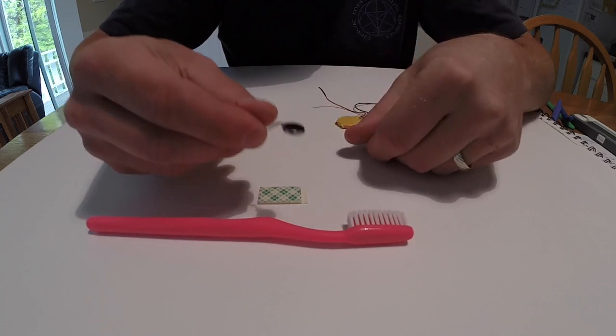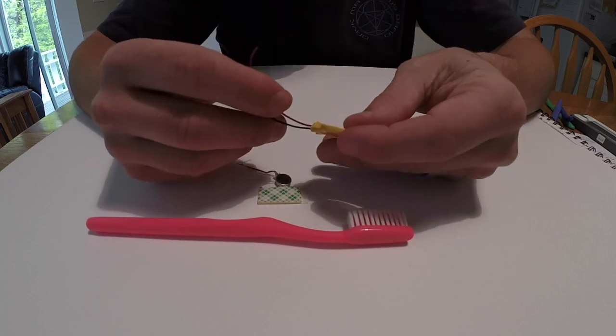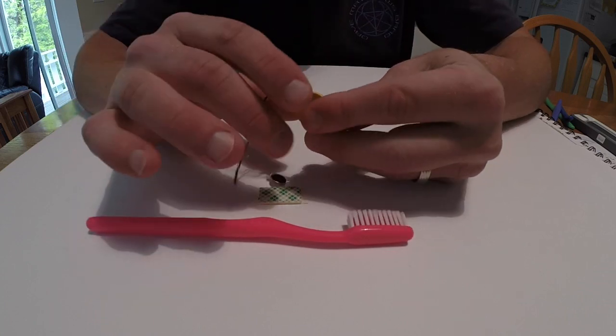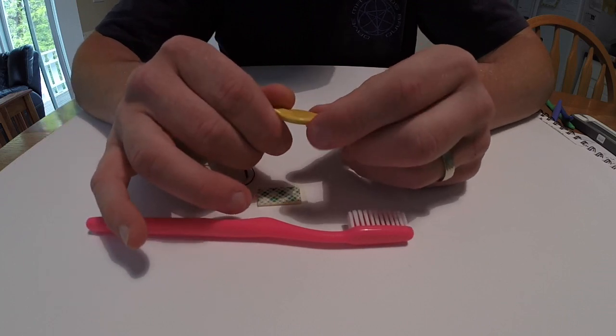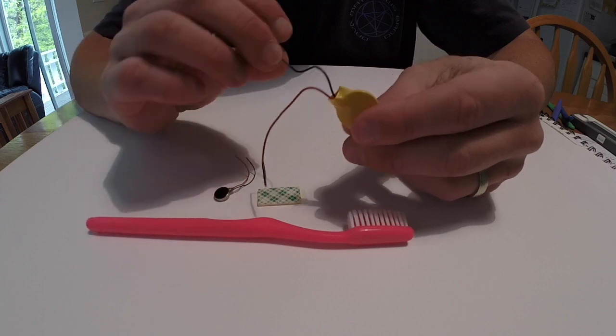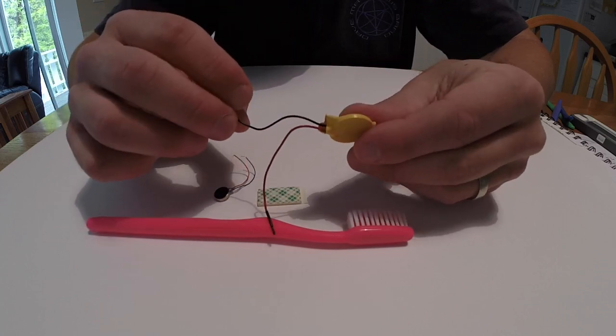And last, we've already got it heat shrinked or shrink wrapped here. We have a three volt coin cell battery with the two leads connected to the coin cell battery, and then we've just shrunk some heat wrap over it to seal it so it's nice and safe.